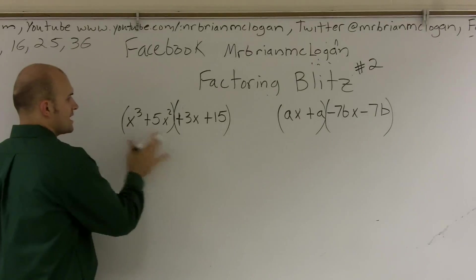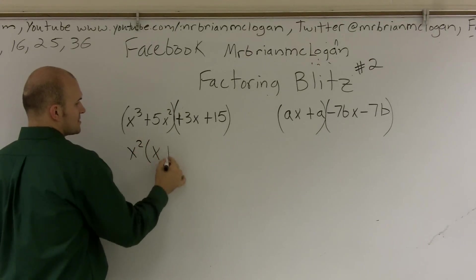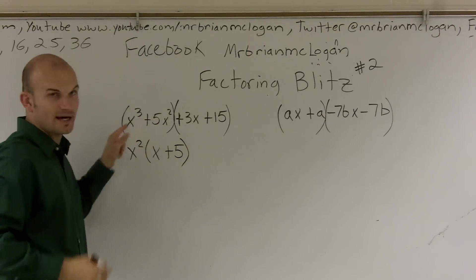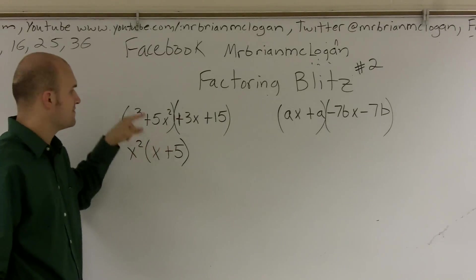So x squared and 5x squared, I can factor out an x squared. I'm left with an x plus 5. Remember to check your answer, you can just multiply that x back through. x squared times x is x cubed. x squared times 5 is 5x squared.